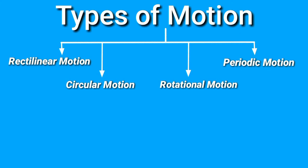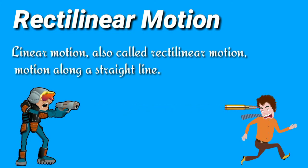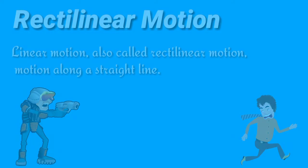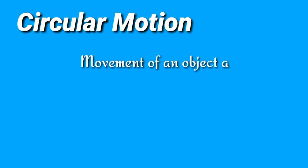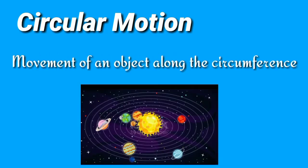Let's see them one by one. Rectilinear motion, also called linear motion, is motion along a straight line. See the example below. Now, circular motion: movement of an object along the circumference is called circular motion.